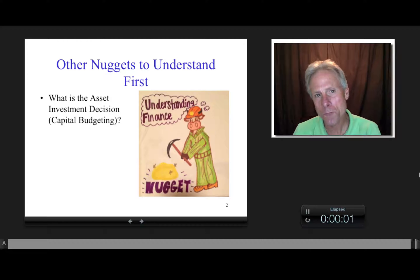First of all, it's going to be helpful if you are familiar with what is the asset investment decision. I have a nugget on that, also known as capital budgeting. But essentially, it's what a company spends its money on. So for example, when Boeing decided to build the Dreamliner aircraft, did they need to hire scientists and engineers and so forth? They did, right?